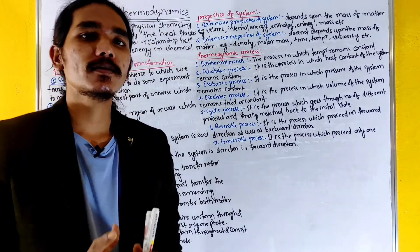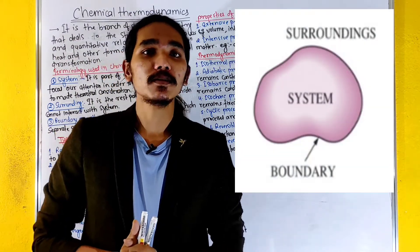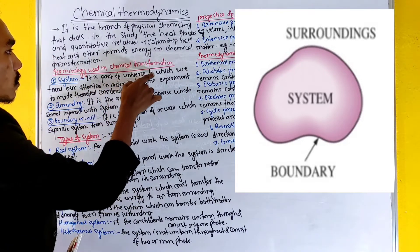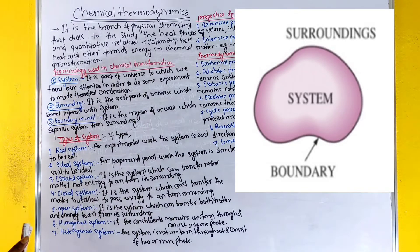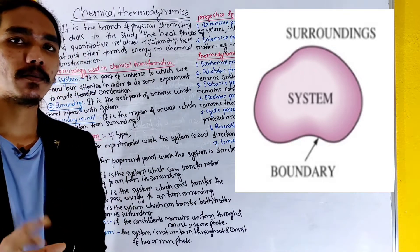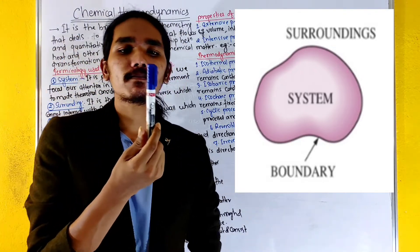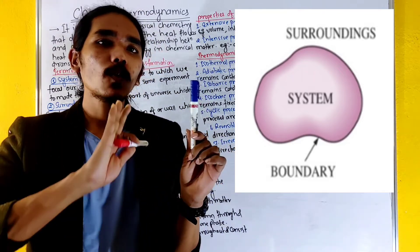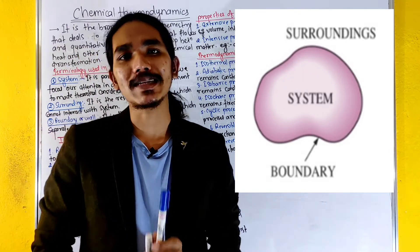A system is the part of the universe to which we focus our attention in order to do some experiment to meet theoretical constitution. If you are a part of the universe, you can use the system. For example, if you are using a marker, you can use the same marker as the system.